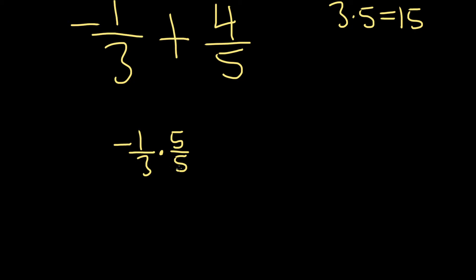But secondly, now in the next step, 5 times 3 will give us 15. So the bottom is going to become a 15 in the next step. Then plus 4 over 5 times, and then here we already have the 5, so we're just missing the 3. So 3 over 3.